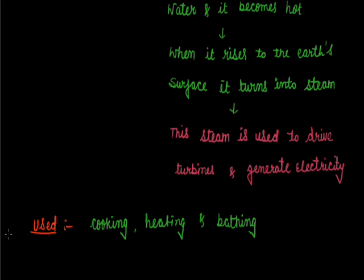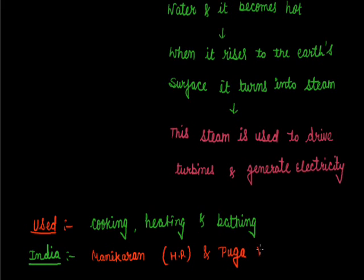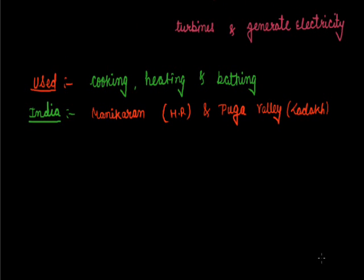In India, geothermal plants can be found at Manikaran in Himachal Pradesh and Puga Valley in Ladakh. As a non-conventional resource, geothermal energy is eco-friendly and always available. However, suitable sites are generally located far away from cities, making it costly to transport the electricity generated.